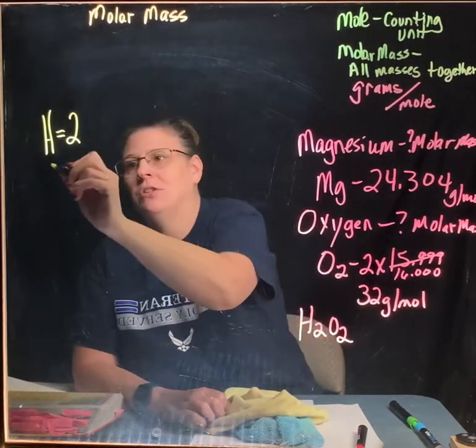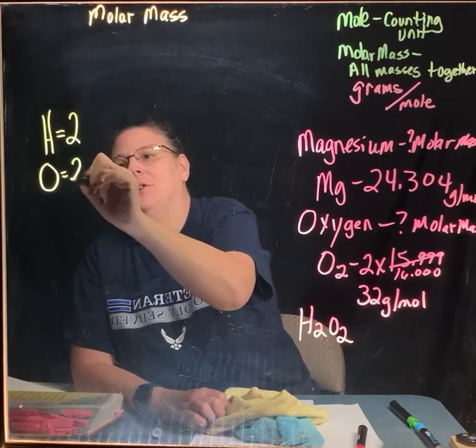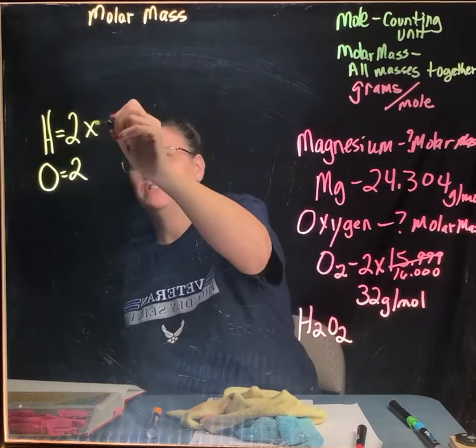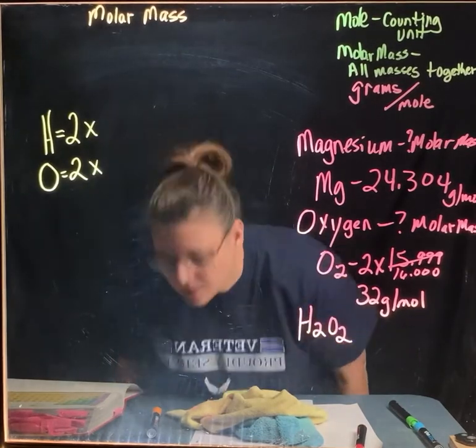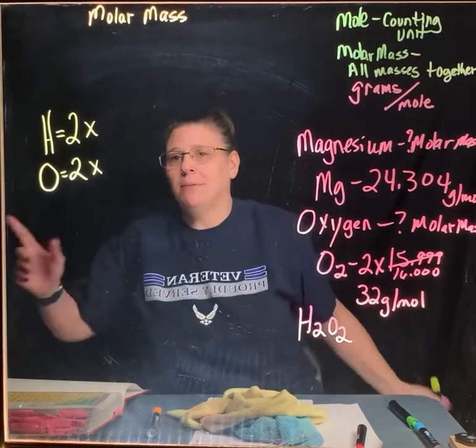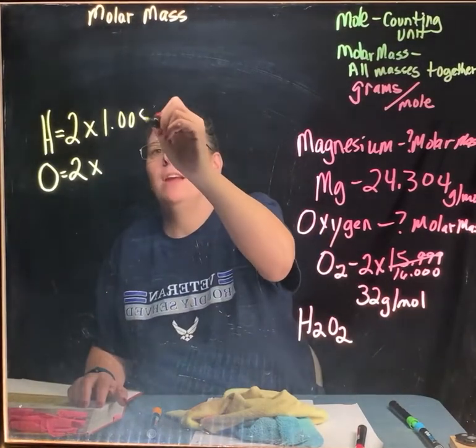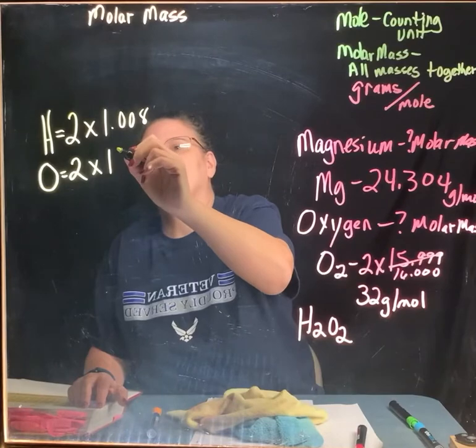How many oxygens? I have two. So you line everything up. I find this is the easiest way. Then I put a multiplication sign. I go to my periodic table, and I find my molar masses. So hydrogen is 1.008. Oxygen is 16.